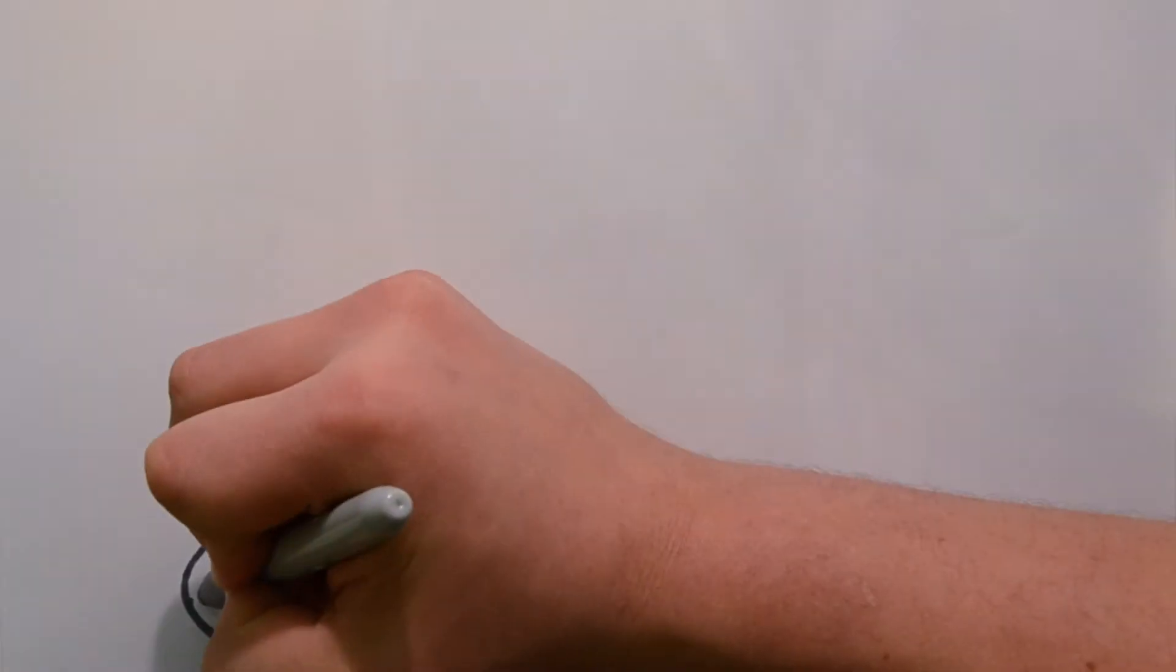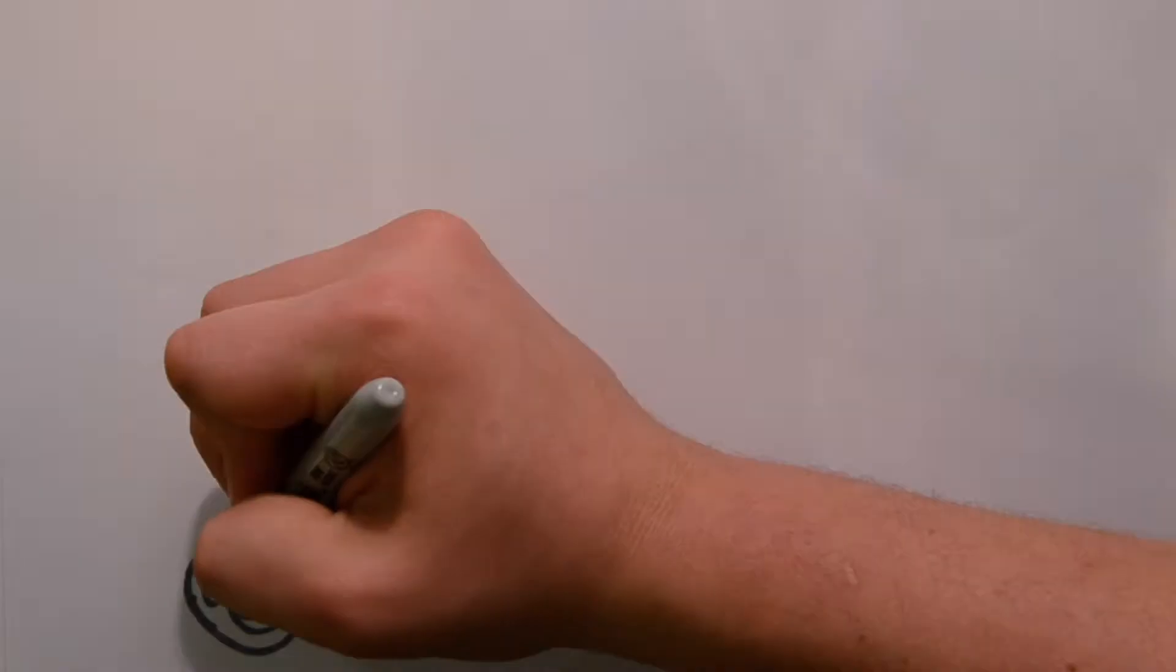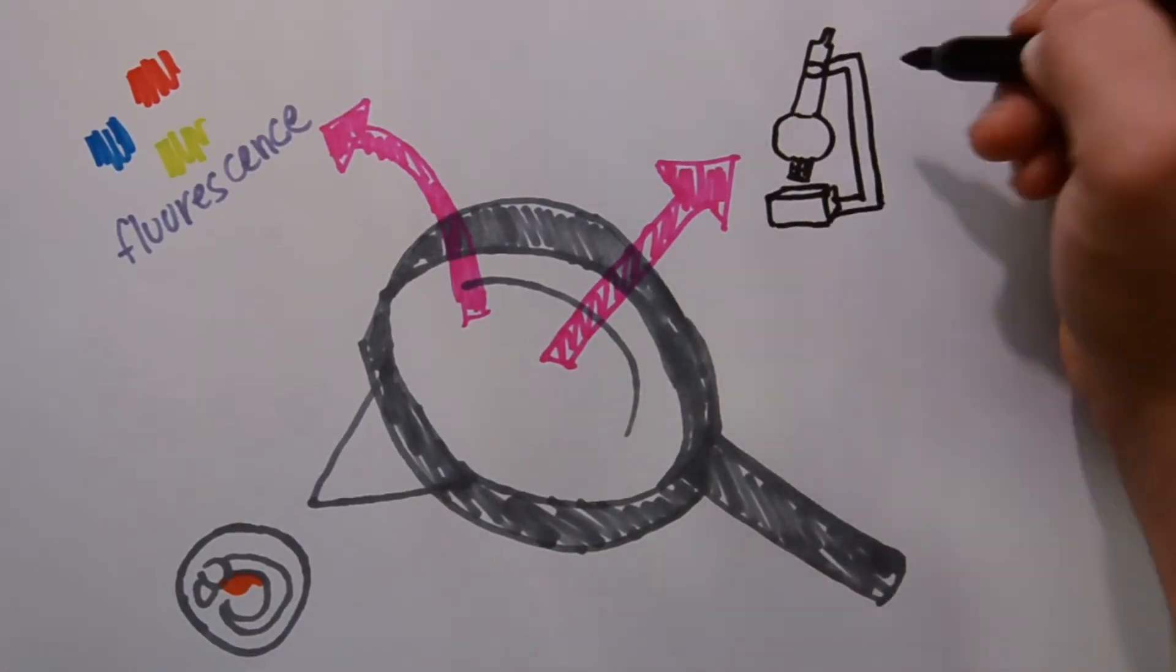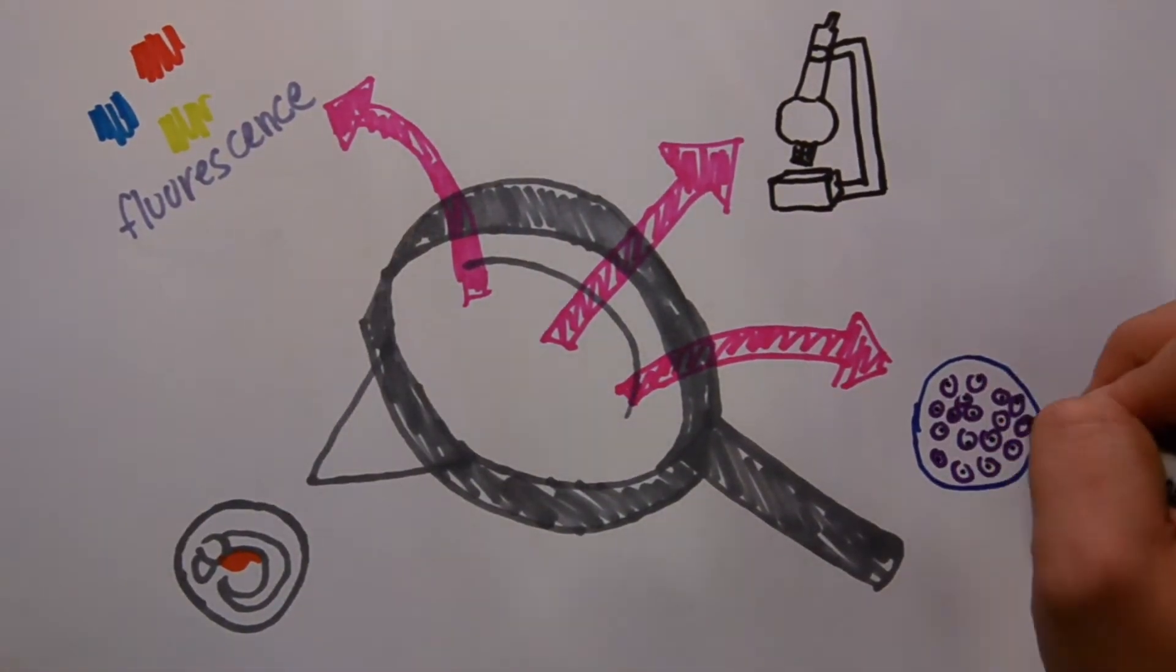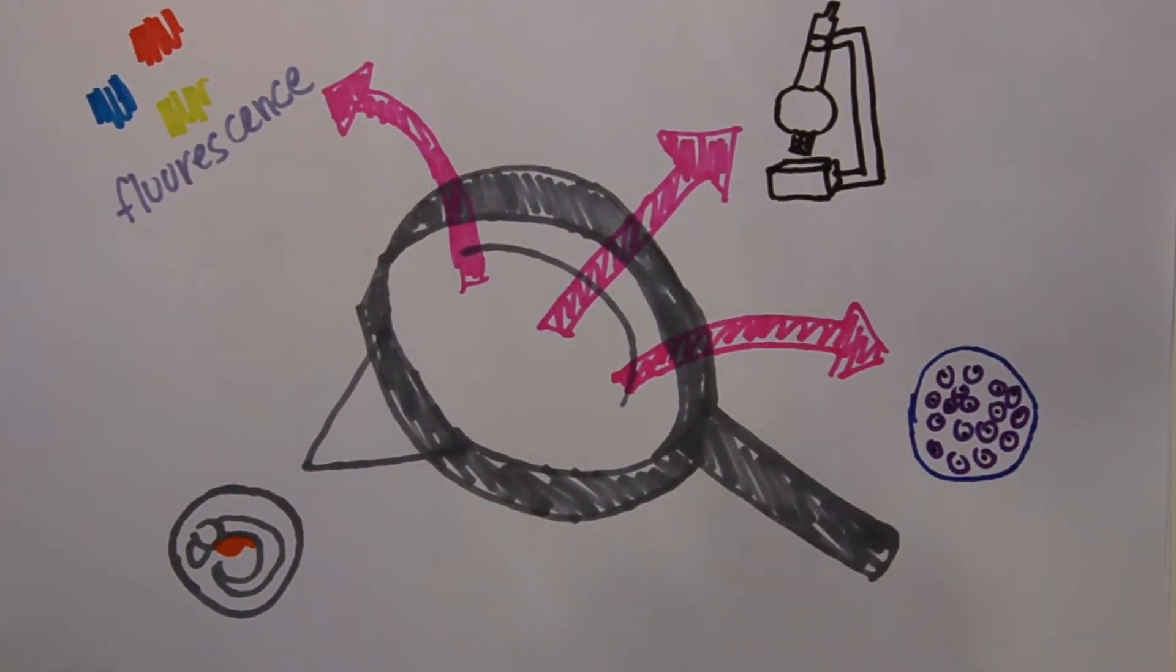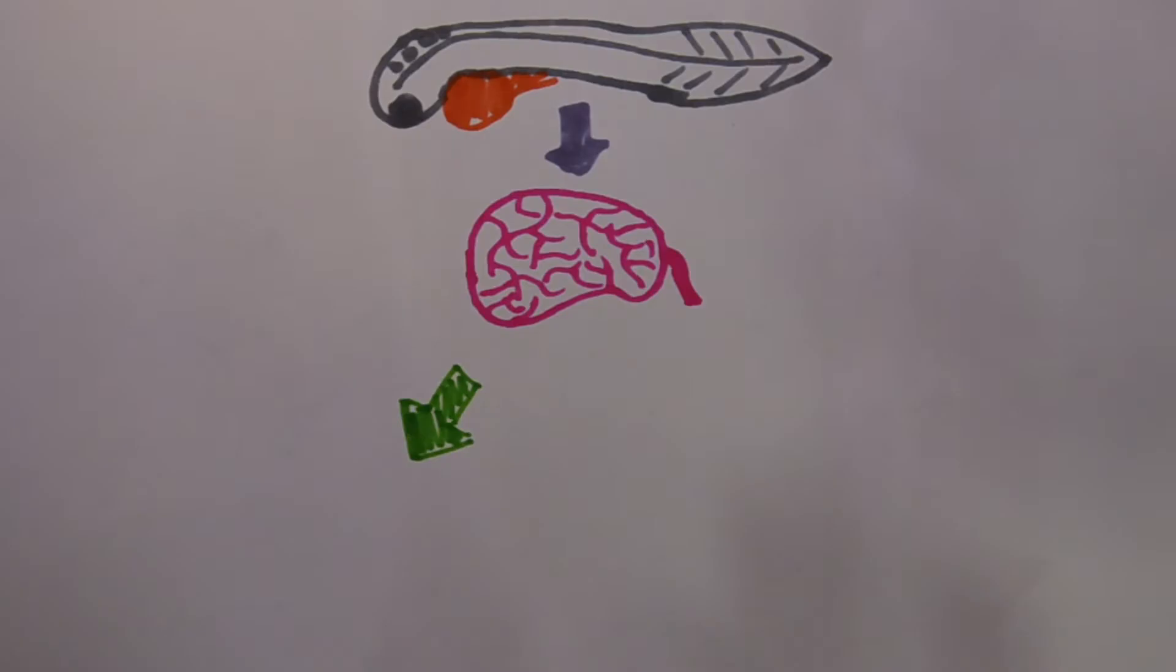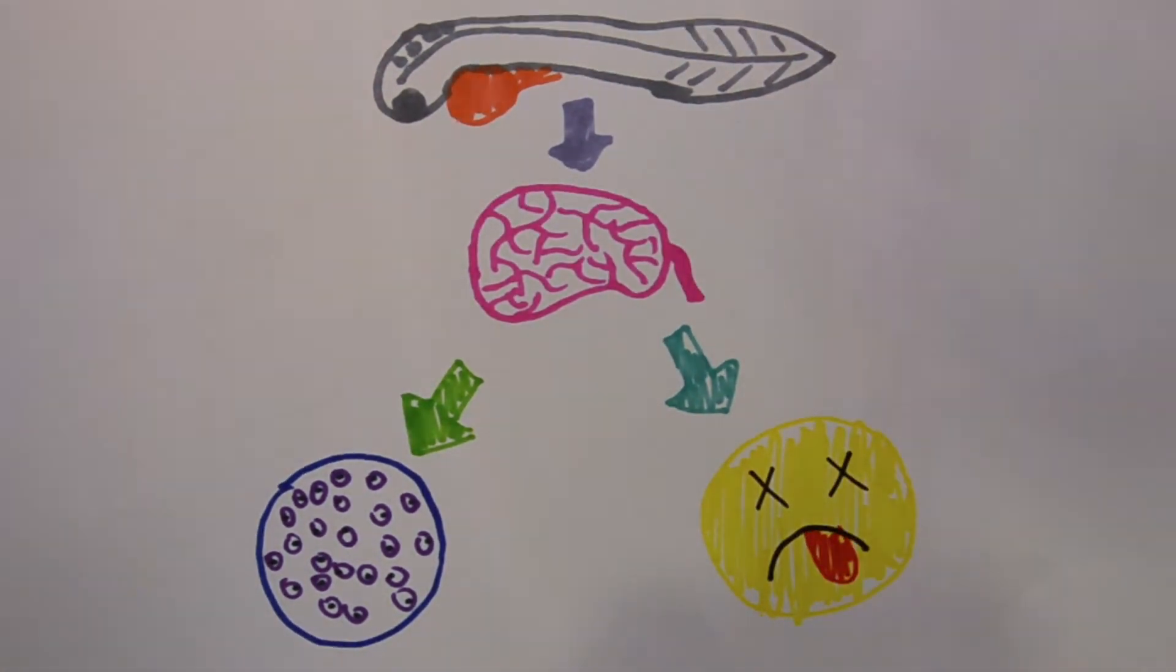Zebrafish develop quickly in a transparent shell outside of the mother, which allows researchers to visualize the embryo using fluorescence microscopy and watch it in real time as the fish develops. In this way, zebrafish have been crucial for our current understanding of development and diseases related to it.